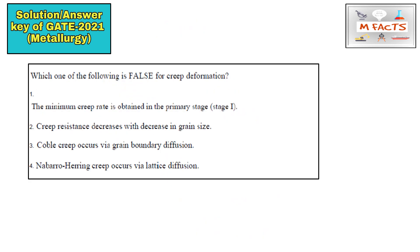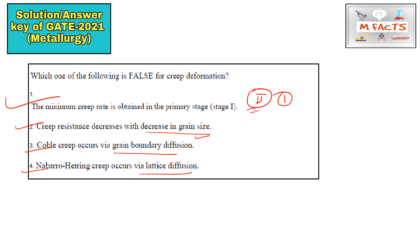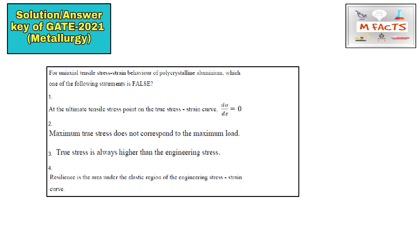The next question asks which statement is false for creep deformation. Option A states: 'the minimum creep rate is obtained in the primary stage.' You can stop here because you know the minimum creep rate is obtained in the secondary stage, not the primary stage. The other statements are correct: creep resistance decreases with decrease in grain size, Coble creep occurs by grain boundary diffusion, and Nabarro-Herring creep occurs by lattice diffusion. So option A is the false statement.